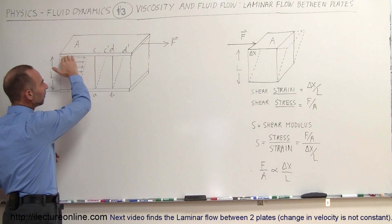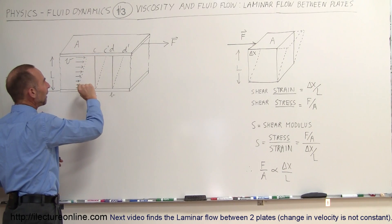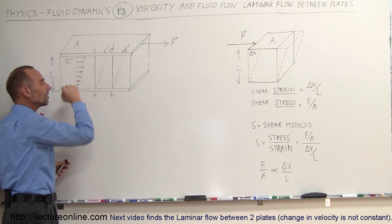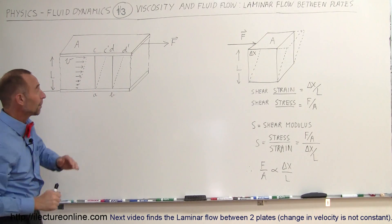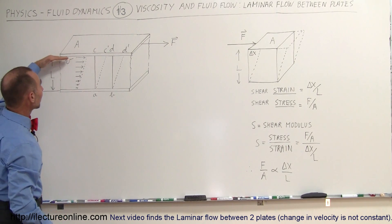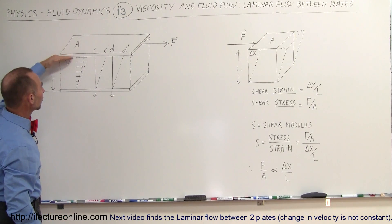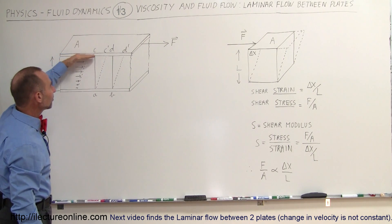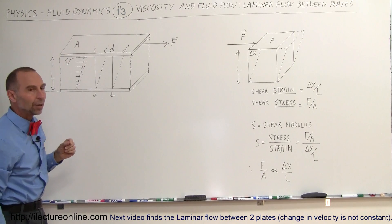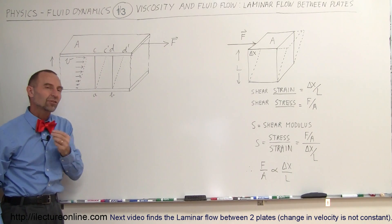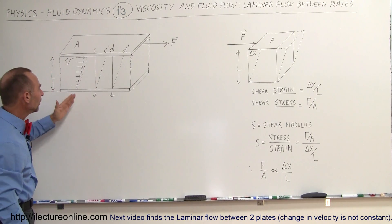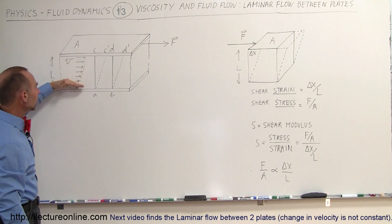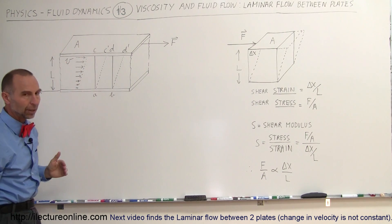As the top plate is being pulled to the right, the velocity of the fluid throughout — from bottom to top — will be differential. The fluid near the very top, just alongside the top plate, will be moving nearly as fast as the plate, and the fluid at the very bottom will be moving at velocity equal to zero. We can assume for the time being that the velocity changes linearly from the top plate down to the bottom plate.